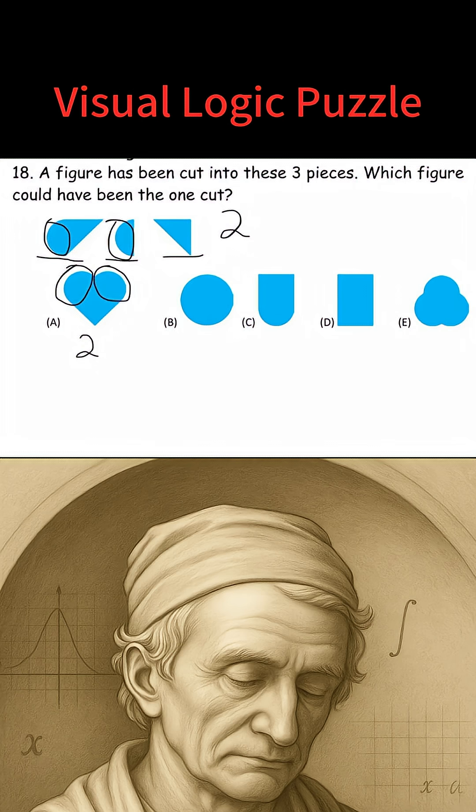Answer choice B has two curved sides, but then there wouldn't be a pointed piece like that shown in the picture. So answer choice B is not correct.